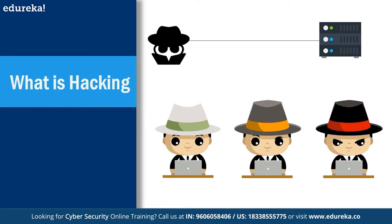White hat hackers — also called pentesters — are people who get into systems with permissions and approvals. They do checks and balances, test the systems, find vulnerabilities, and report them to the authorities in a very controlled environment. Black hat hackers are the ones you see in movies — the guys who try to harm systems, extract data, and take organizations to a very difficult level.